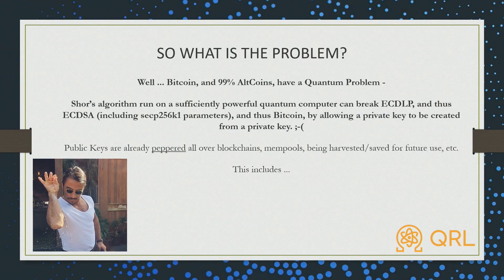So what's the problem? Bitcoin, and 99% of all other altcoins, have essentially a quantum problem. The problem is Shor's algorithm, run on a sufficiently powerful quantum computer, can break EC-DLP and thus ECDSA — Bitcoin's digital signature algorithm — and it can allow a private key to be created from a public key, which is not supposed to be able to happen.